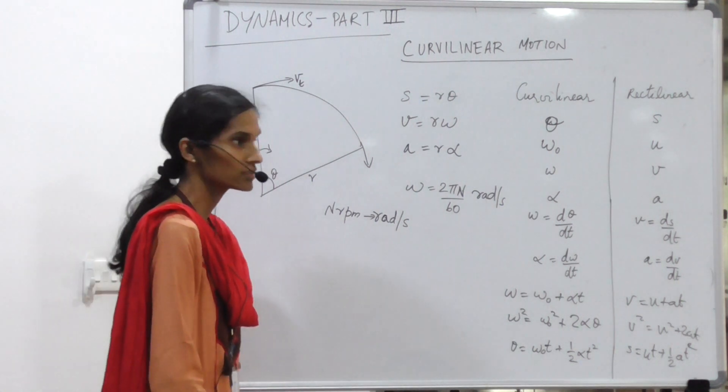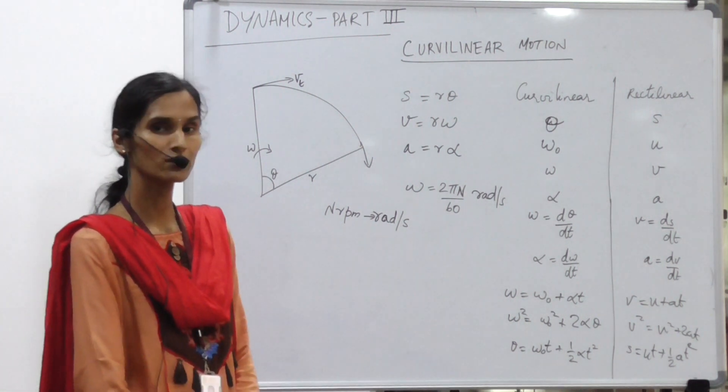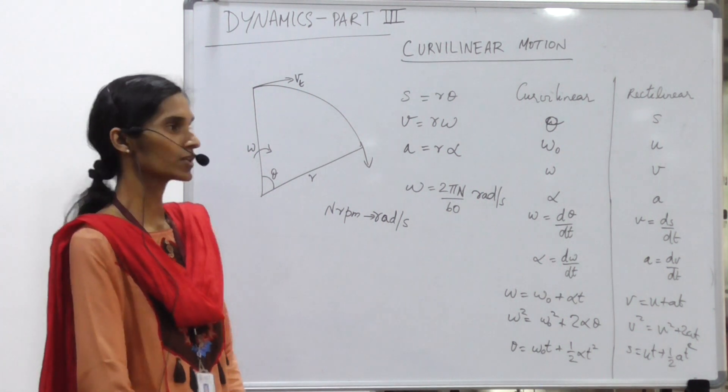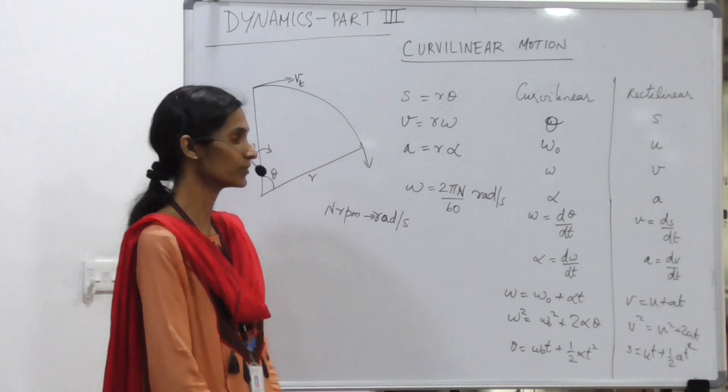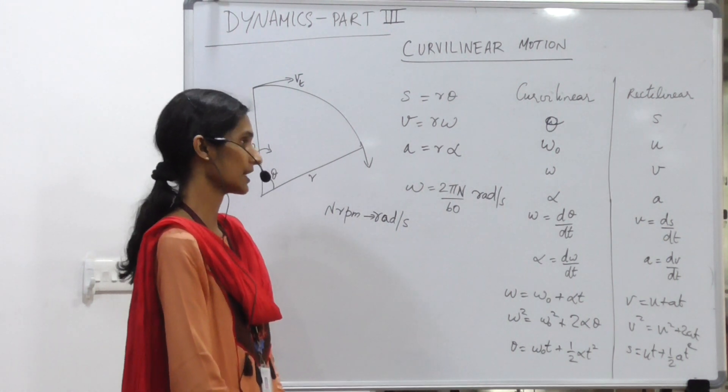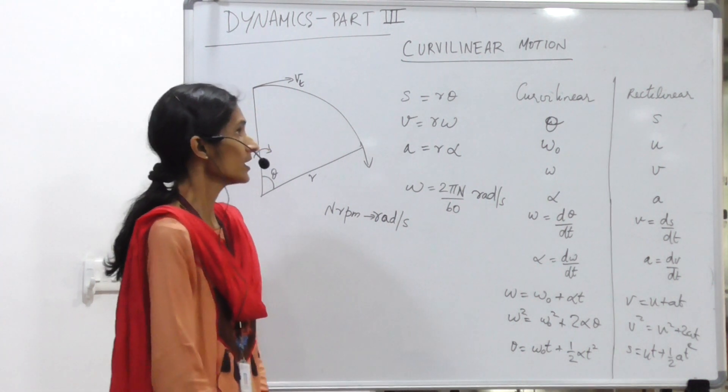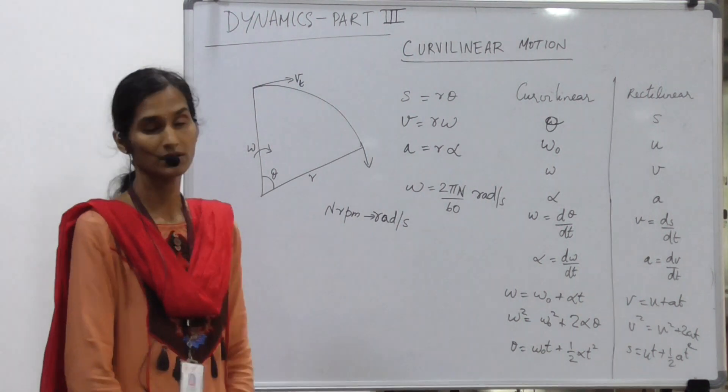The angular velocity may either be in radians per second or it can be given in revolutions per minute. The conversion of revolutions per minute into radians per second is as shown: for n revolutions per minute, you convert it as 2πn/60 radians per second. Now with this curvilinear motion we will look at certain problems.